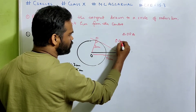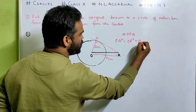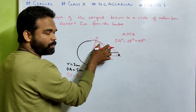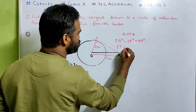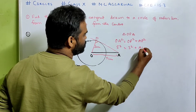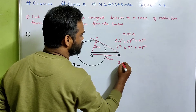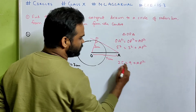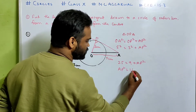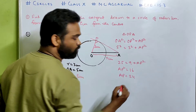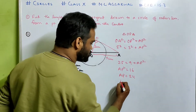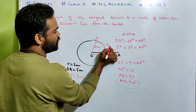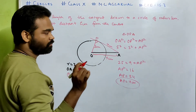By Pythagoras theorem: OA² = OP² + AP². Hypotenuse square equals base square plus perpendicular square. Substituting: 5² = 3² + AP², so 25 = 9 + AP², which means AP² = 25 − 9 = 16. So AP = ±4. We take the positive value because length cannot be negative, so AP is 4 centimeters.